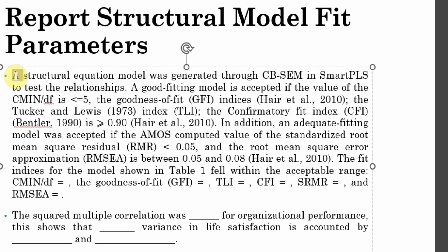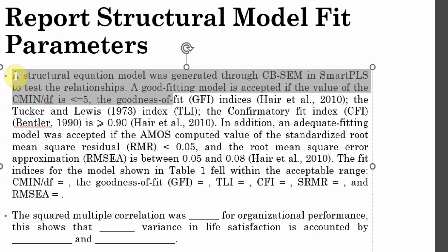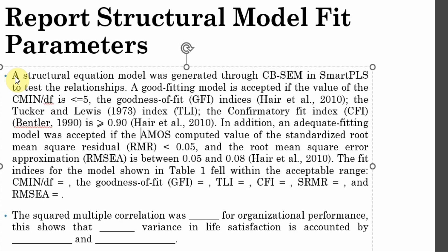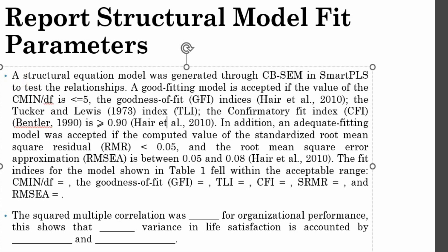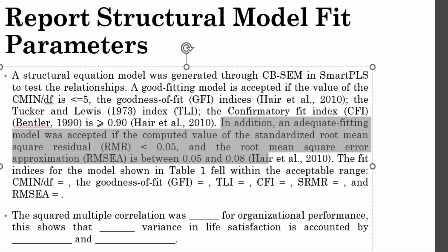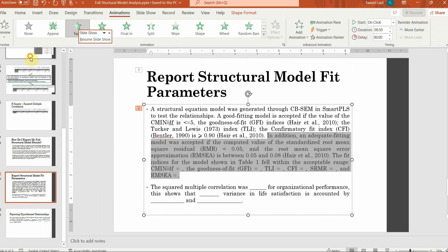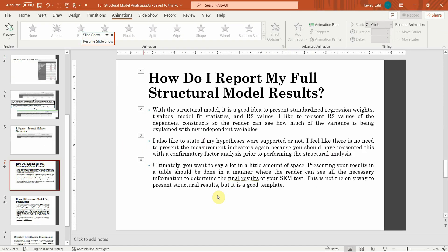A structural equation model was generated through CB-SEM in SmartPLS to test the relationships. A good fitting model is accepted if C-min is less than 5. Report goodness-of-fit indices including the Tucker-Lewis Index and Confirmatory Fit Index — these are good if greater than 0.90. Also report SRMR and RMSEA values. Copy the fit indices from SmartPLS into the template.